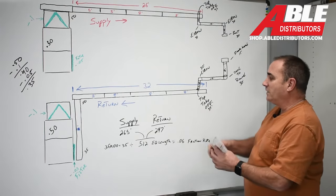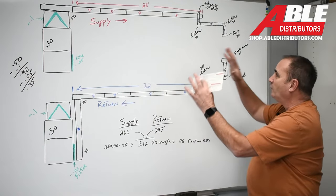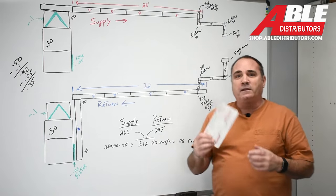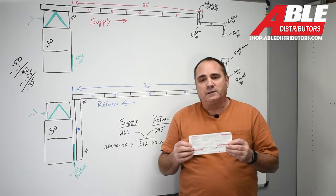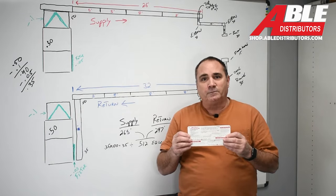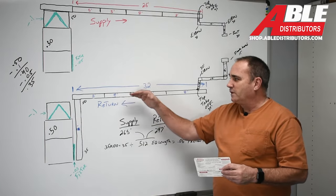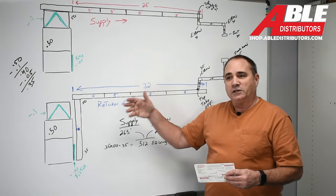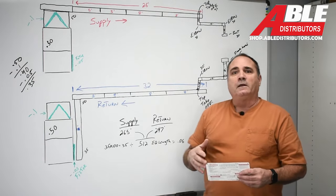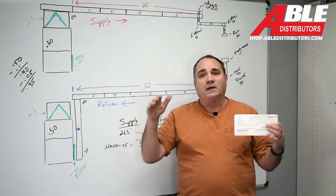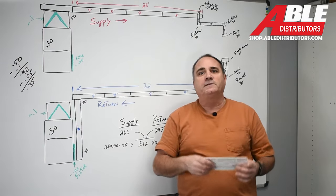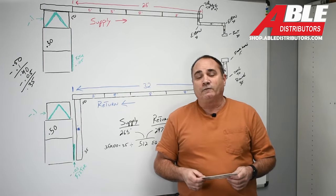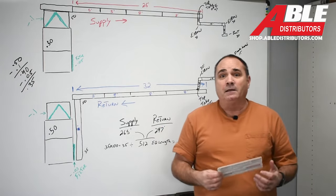So this is kind of just an intro. Every single thing changes. Now, they make ductulators or duct calculators for insulated duct because, again, the roughness, the amount of friction that air has as it moves through is different than just steel. They also have ones for flex duct because, again, that corrugation of the flex changes how air flows through it, and it's a big, big difference.